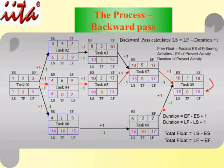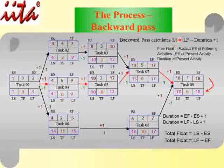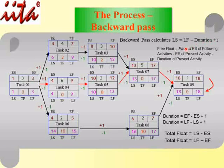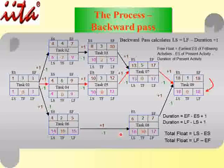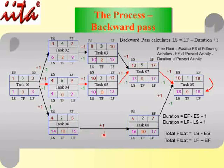Going backward, the preceding task's Late Finish is 17. So we get LF = 17 for those tasks. For Task 7 with LF = 17 and duration = 5: LS = 17 − 5 + 1 = 13. For Task 8 with LF = 17 and duration = 2: LS = 17 − 2 + 1 = 16. Going further back, if a task starts on the 16th month, the preceding task's Late Finish is month 15, so we subtract 1 to get 15.